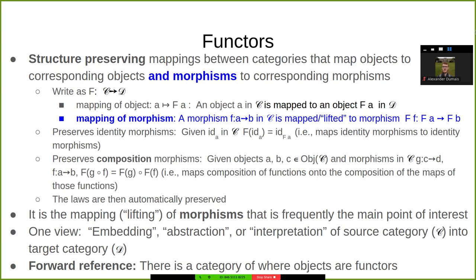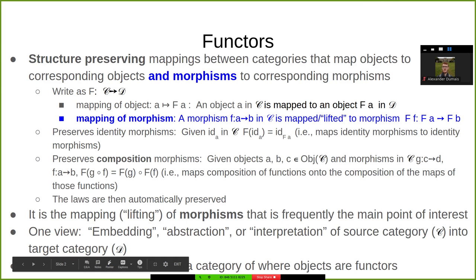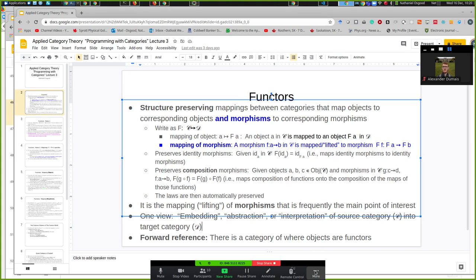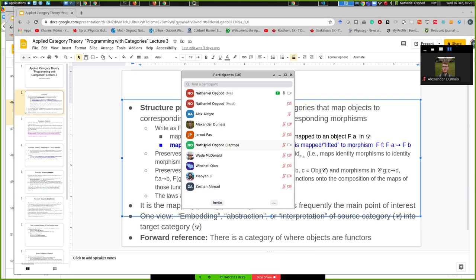Now this point about being structure-preserving is quite central. They preserve several aspects of structure. At the most basic level, morphisms between objects are preserved. I'm going to switch over to this blackboard for a moment and permit myself the opportunity to display that particular screen. Here we go.